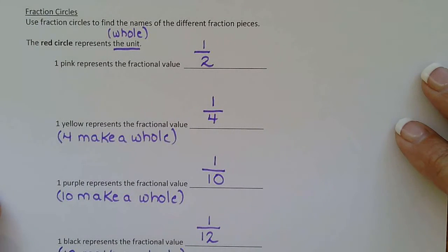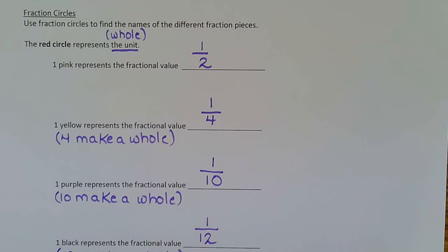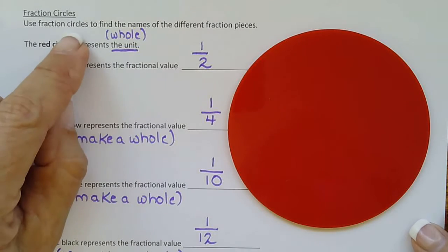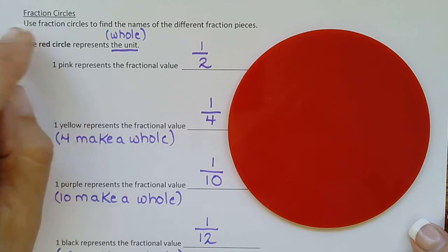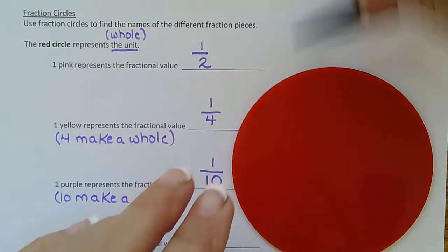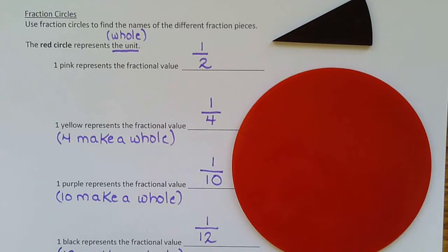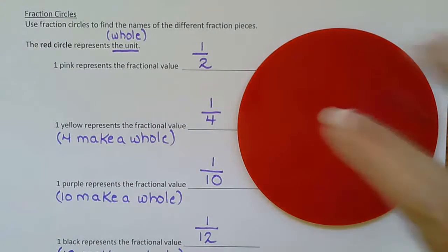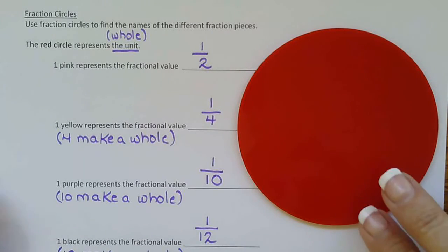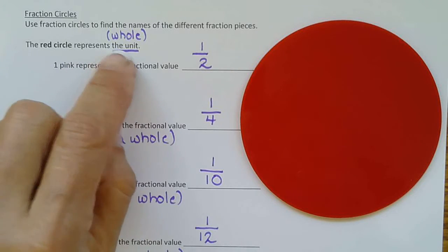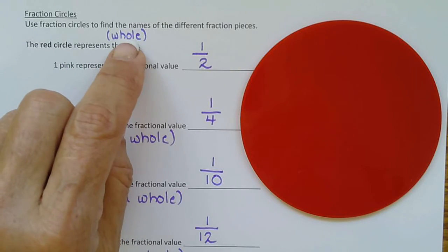So we're going to be working with fraction circles. And it's telling us, use the red fraction circle to count as the whole. And they have to tell us what the whole is because if they don't tell us, then we don't know what's considered whole. Because I could consider this a whole. It just depends what the directions say. So they're starting us off easy because most of us think of it as a whole circle as being the whole 100 percent. So that stands for one. And we know that because it says the red circle represents the unit, which means one whole.